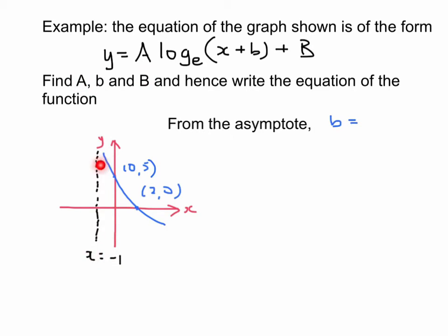Now the first thing you look at is the asymptote, which is x equals negative 1. And that means that you would see the opposite sign of negative 1 inside the bracket here, which means you have a plus 1 there. Now because b and 1 have the same sign, then we just keep it as b equals positive 1. So therefore, we can write this equation with plus 1 instead of b. So we have y equal a log to the base e of x plus 1 plus B.